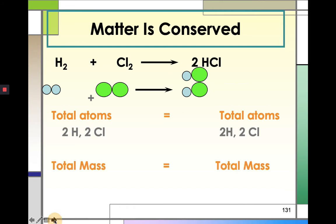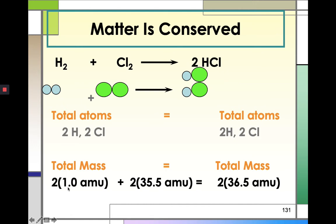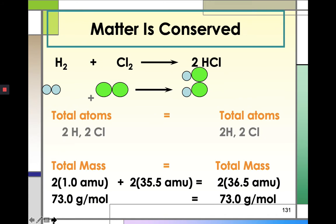In terms of mass: 2 times 1.0 atomic mass units for hydrogen, and for chlorine, 35.5, with two atoms of chlorine — 2 times 35.5. This must equal the product side, which is 36.5, the molar mass of HCl. If you get the total, they must be equal to each other. This is an application of the law of conservation of mass.